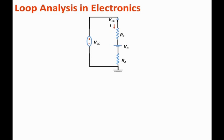Let me show you how we apply loop techniques in circuit courses. We basically sum the voltages around the loop. The convention is: if the current enters the negative polarity of an element, we subtract the voltage; if the current enters the positive polarity, we add the voltage. You can use the reverse logic if you want, but this is the standard convention.